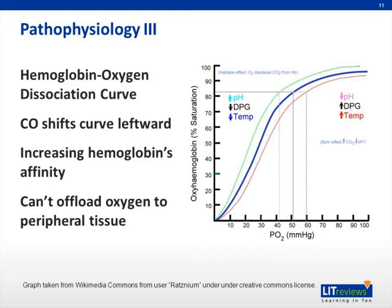Here is the oxygen hemoglobin dissociation curve. Carbon monoxide is one factor which may shift this curve leftward. A leftward shift causes hemoglobin to have a greater affinity for oxygen and hold on to it, making it harder to offload its oxygen to peripheral tissues. This is caused by a conformational change in the hemoglobin molecule as carbon monoxide occupies at least one of the four available heme sites.